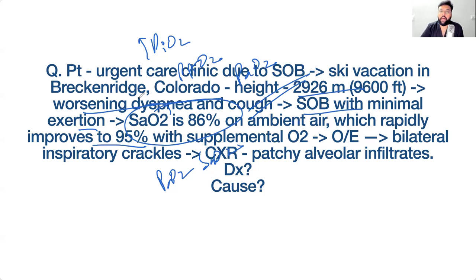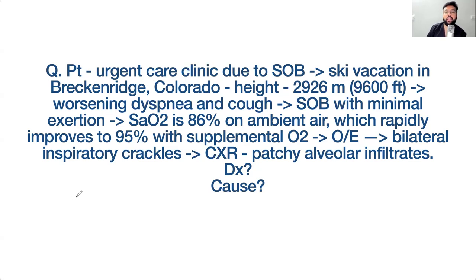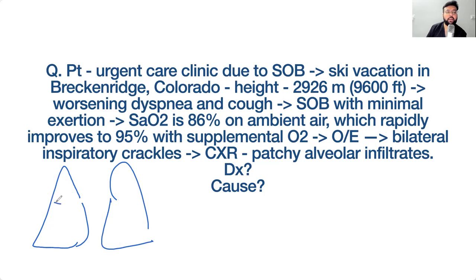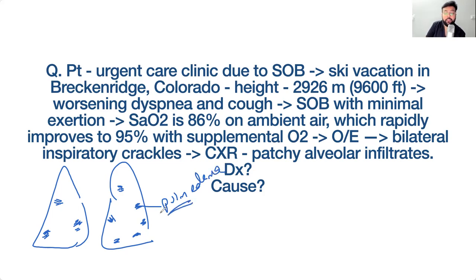This patient develops bilateral inspiratory crackles and chest X-ray shows patchy alveolar infiltrates. These patchy infiltrates are actually pulmonary edema. The diagnosis is high altitude pulmonary edema. But why is the distribution patchy at high altitude?